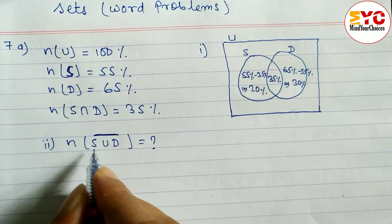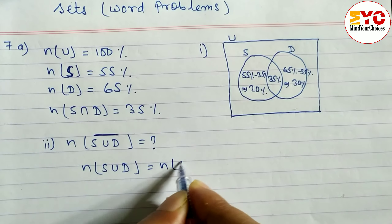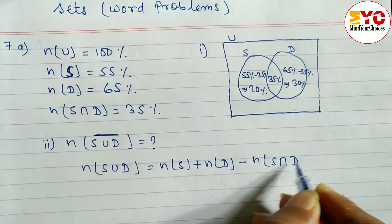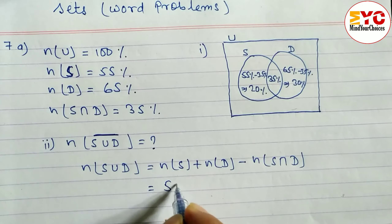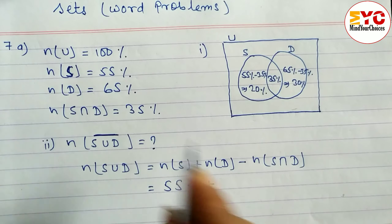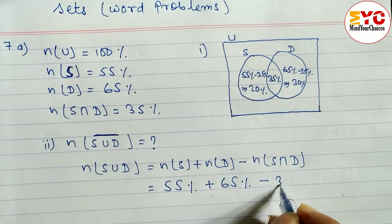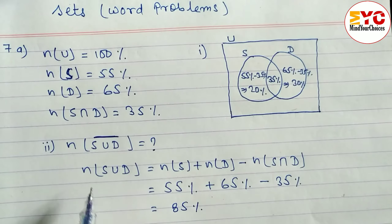n(S ∪ D) is equal to n(S) plus n(D) minus n(S ∩ D) — this is the formula to find S union D. n(S) is 55 percent, n(D) is 65 percent, and n(S ∩ D) is 35 percent. So: 55 plus 65 minus 35 gives us 85 percent. So n(S ∪ D) equals 85 percent.